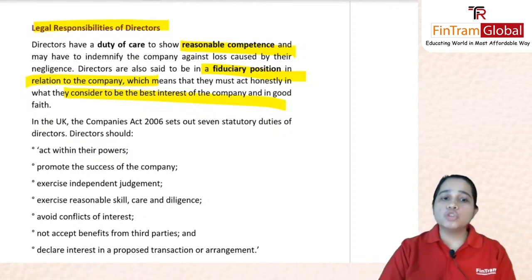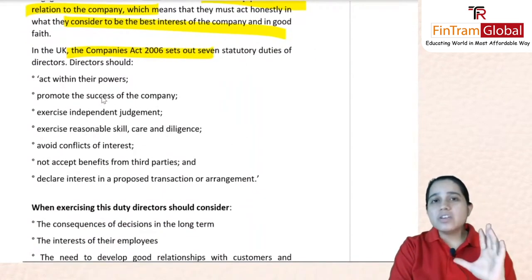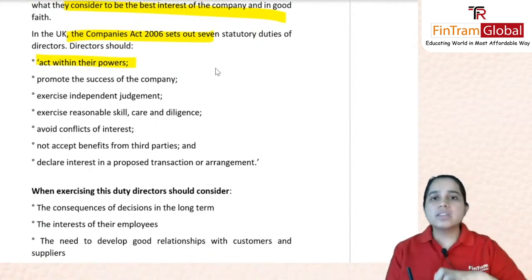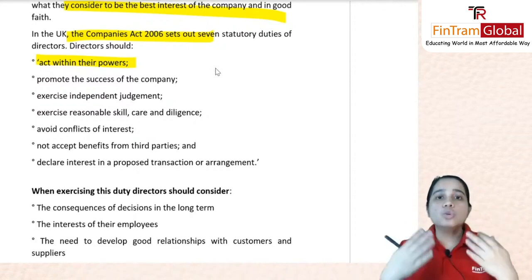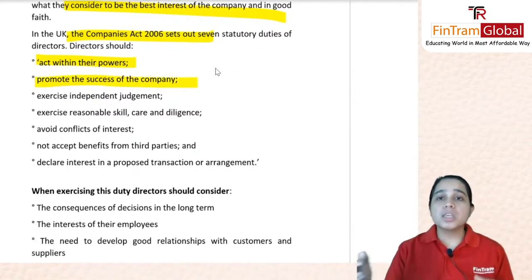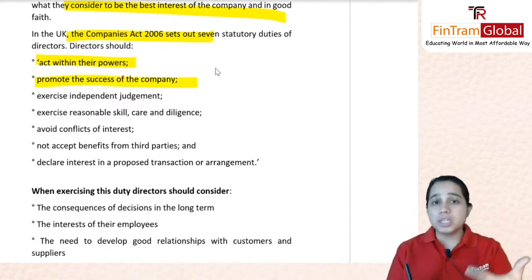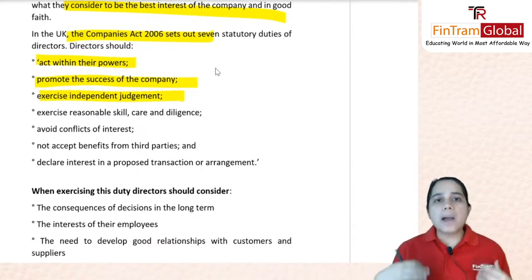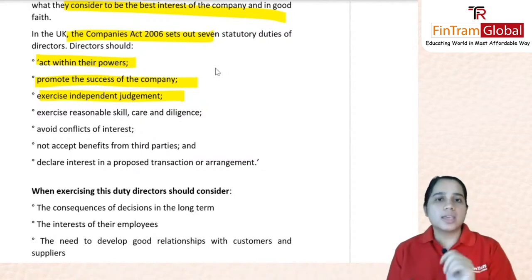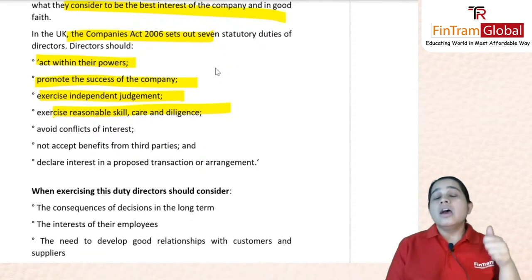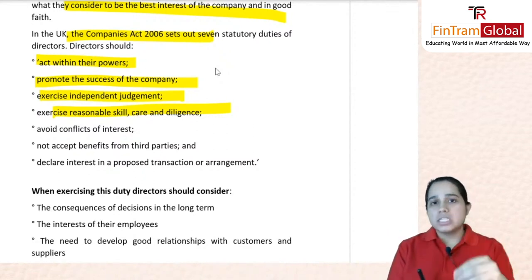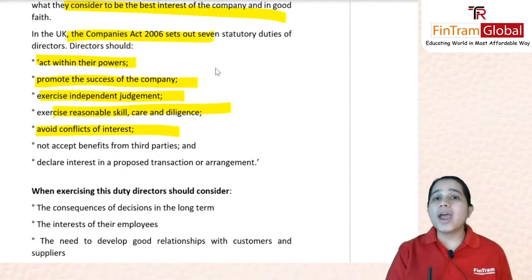In the UK, the Companies Act of 2006 has set out seven statutory duties for directors. Directors should act within their powers — they cannot go outside those powers and do whatever they want. They should promote the success of the company. They need to exercise independent judgment and apply reasonable skill, care, and diligence. They should be diligent and have reasonable care at all levels. They should avoid conflicts of interest between owners, shareholders, and directors.